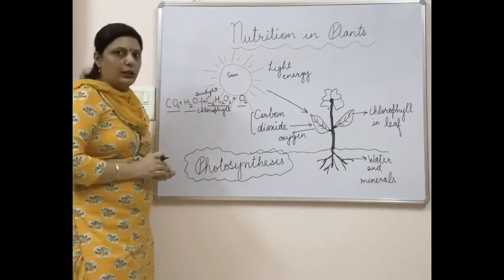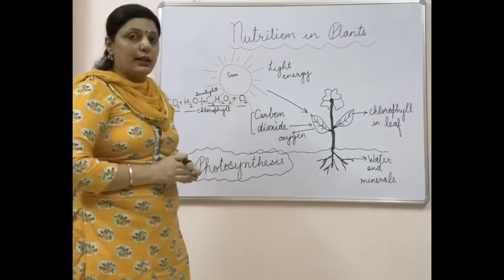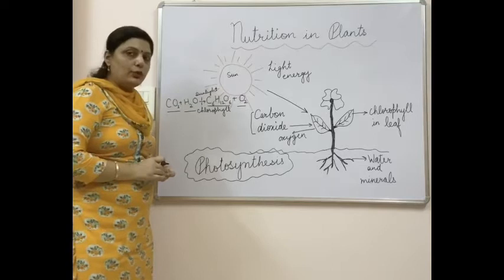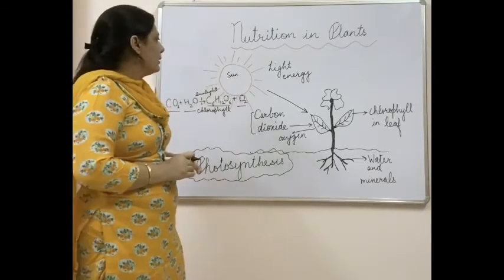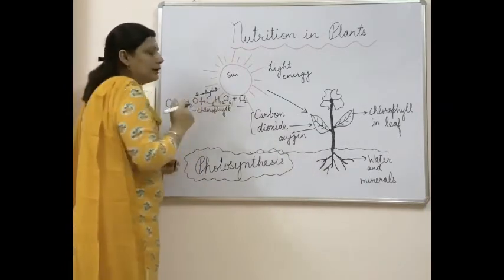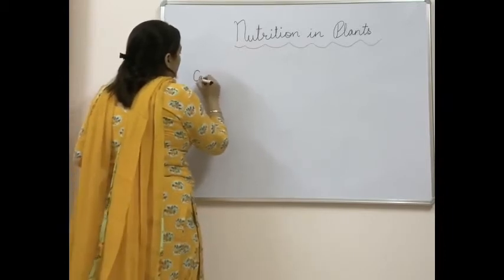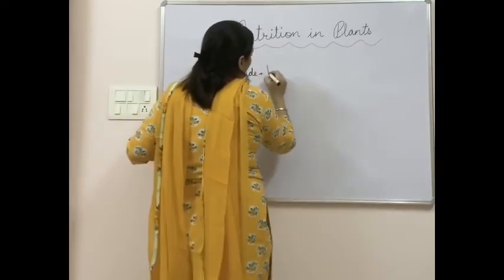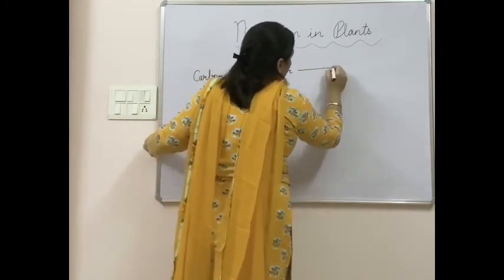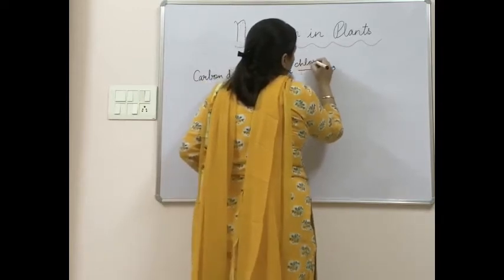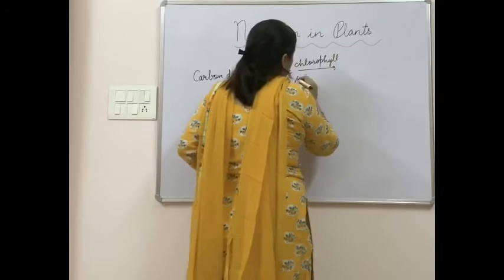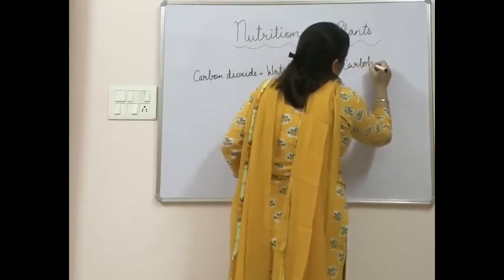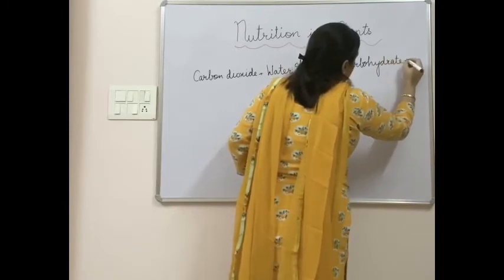Carbohydrate is stored in the leaves of the plant and then sent to all other parts of the plant, which use it as energy. Now let's write this reaction in detail. The equation is: carbon dioxide plus water, with chlorophyll and sunlight on the arrow, gives carbohydrate plus oxygen. You must learn and understand this equation — why chlorophyll and sunlight are important and how carbohydrate is formed.